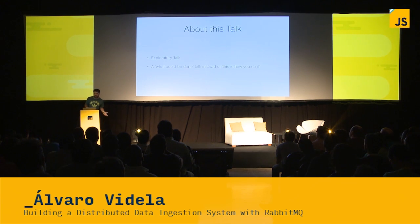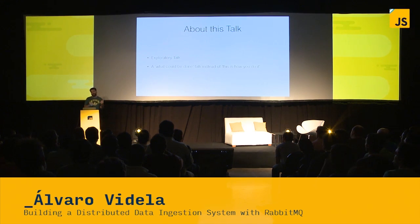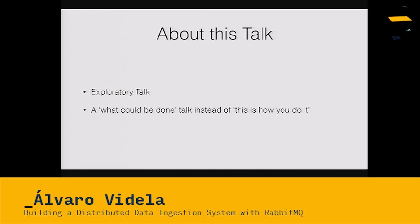The idea of the talk is to say what can be done with Rabbit, not necessarily how to do it. We have plenty of tutorials on our documentation on the website, so if you really want to see the code for Node.js, Java, PHP, Python, Clojure, .NET, Haskell, whatever, we have it there.